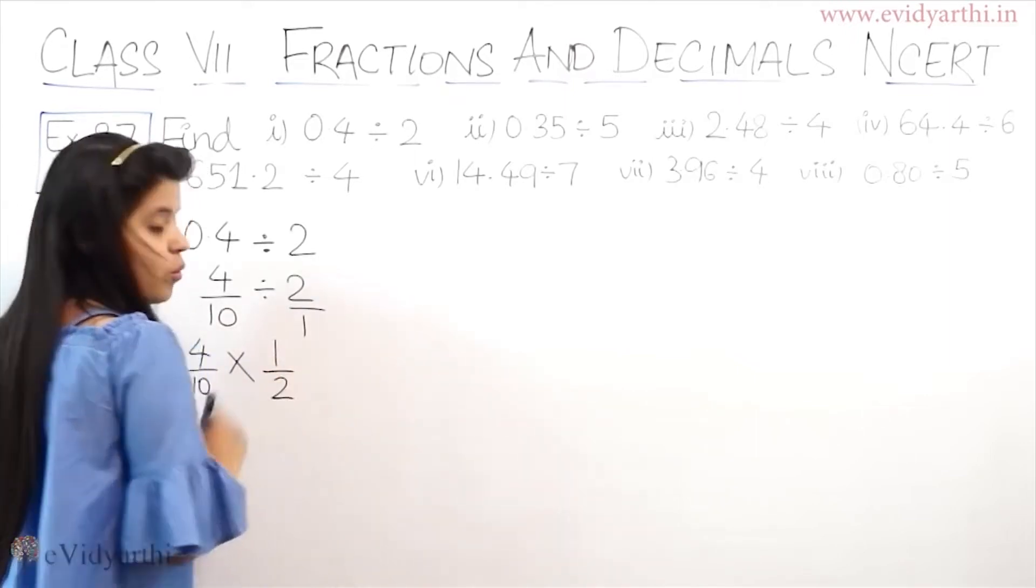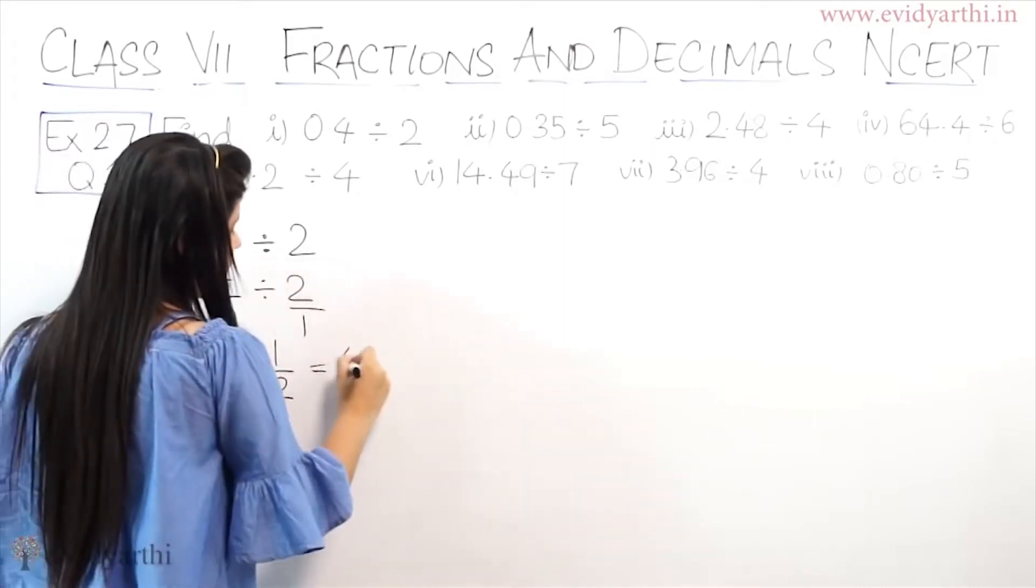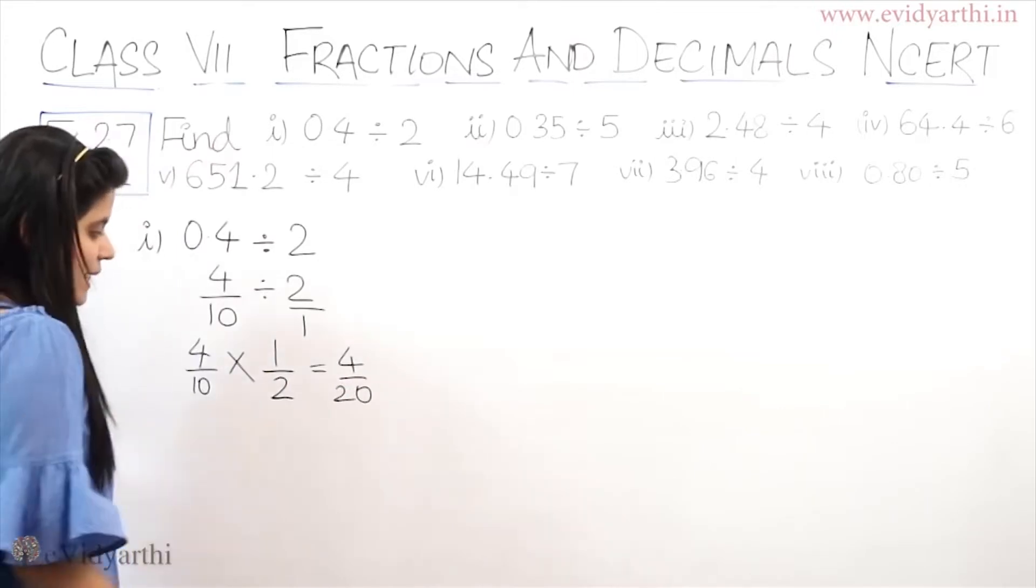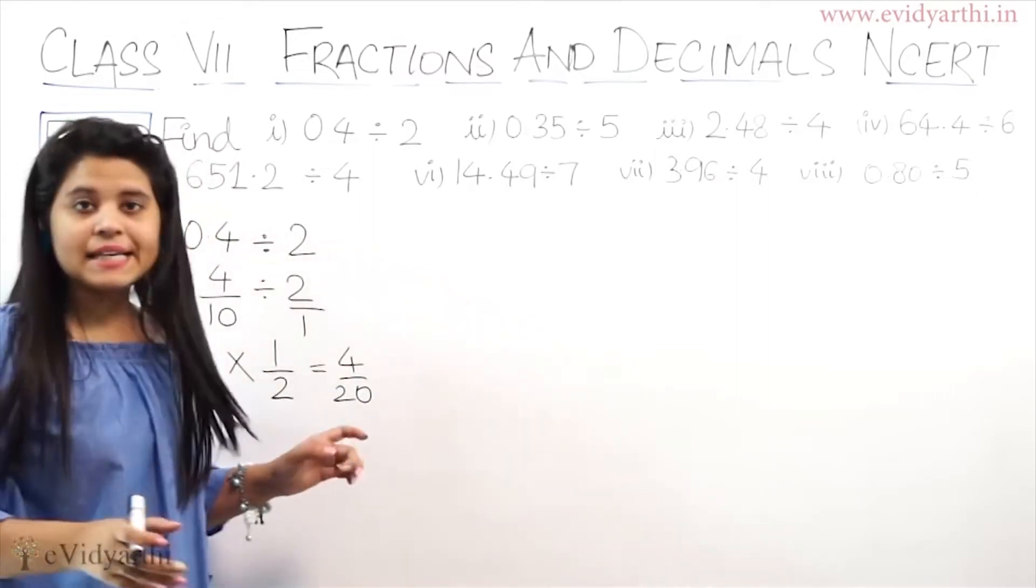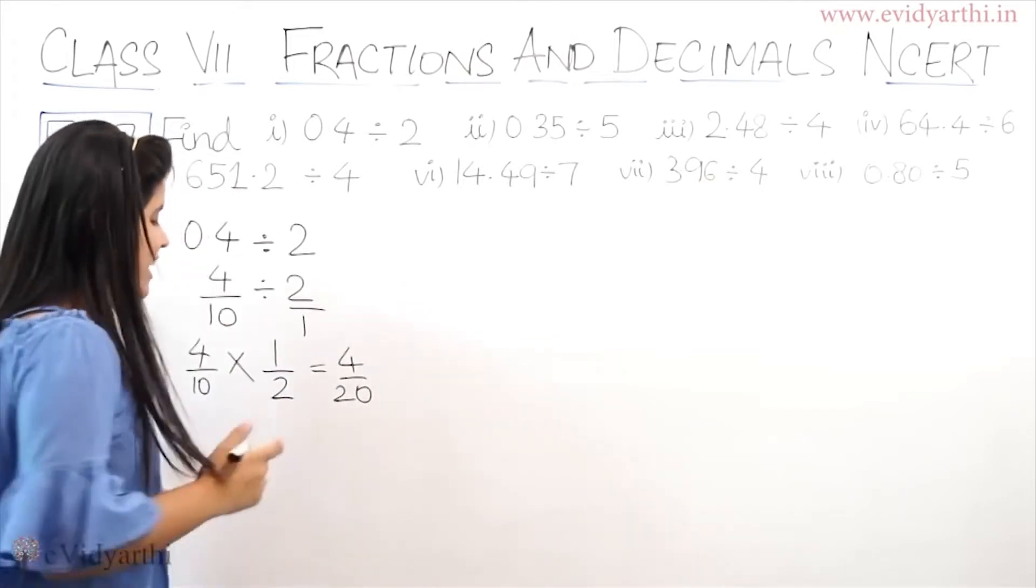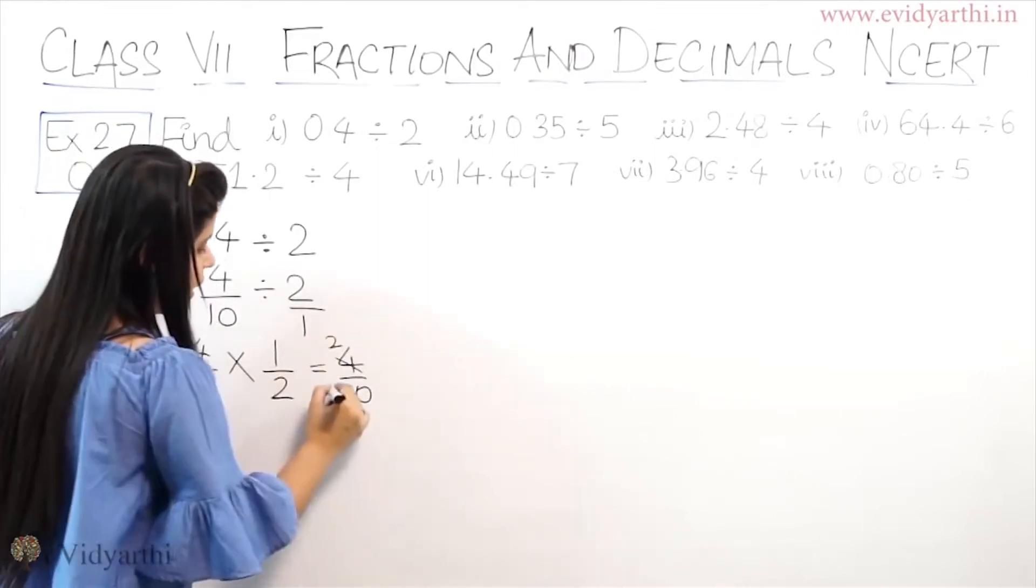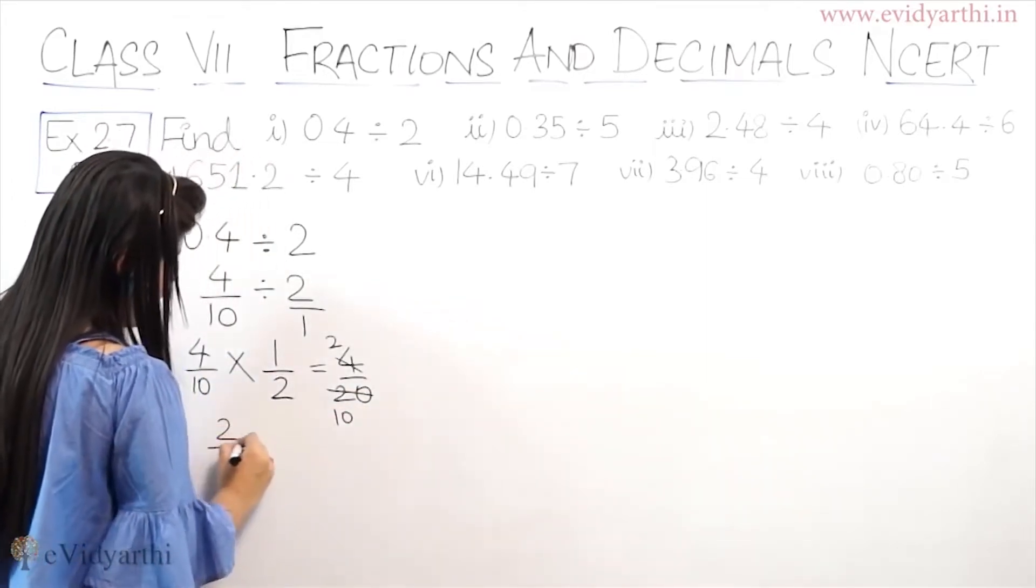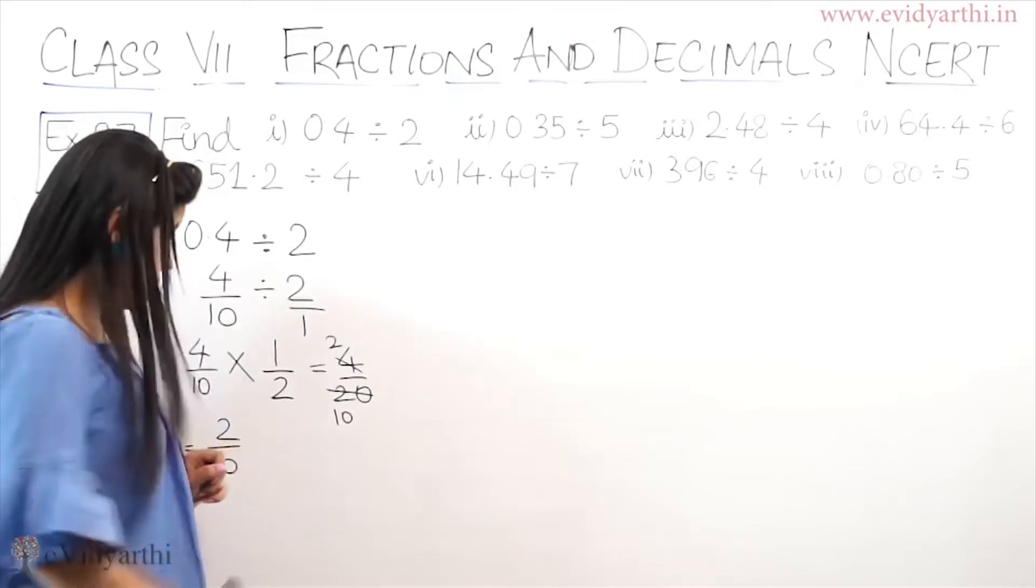So 2 upon 1 divided by 4 upon 10. Divide becomes multiply and 2 by 1 becomes 1 by 2. So this will give me 4 into 1 is 4 and 10 into 2 is 20. So this is 4 upon 20. Now I can cut this, 4 and 20. If I cut this to simplify, this is 2 and this will be 10 because 2 into 10 is 20. So this is 2 upon 10.